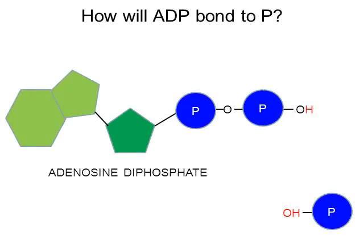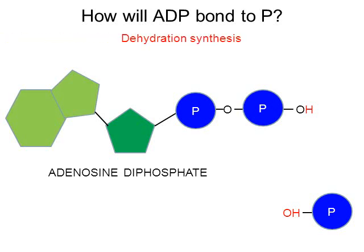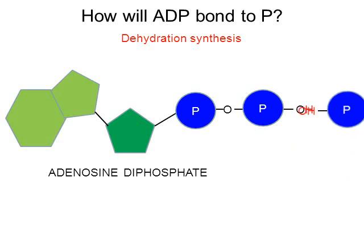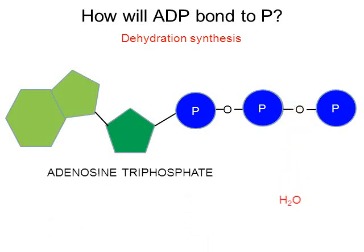How will ADP bond to that one single phosphate? In the picture we have adenosine diphosphate in the middle and a broken-off phosphate at the bottom right. To attach the two, recall the chemical reaction process where larger molecules are built from smaller molecules — that's called a dehydration synthesis reaction. When those molecules come together, enzymes help break some bonds and water is removed. When water is removed, that broken-off phosphate connects to the ADP to make adenosine triphosphate. Dehydration synthesis builds molecules from smaller molecules.